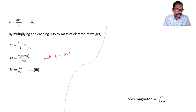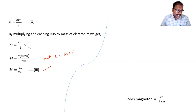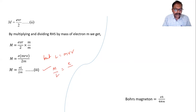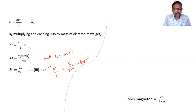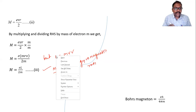In this formula, L = mvr. If we rearrange, M/L = e/(2m). This ratio M/L is called the gyromagnetic ratio. So e/(2m) is the gyromagnetic ratio.